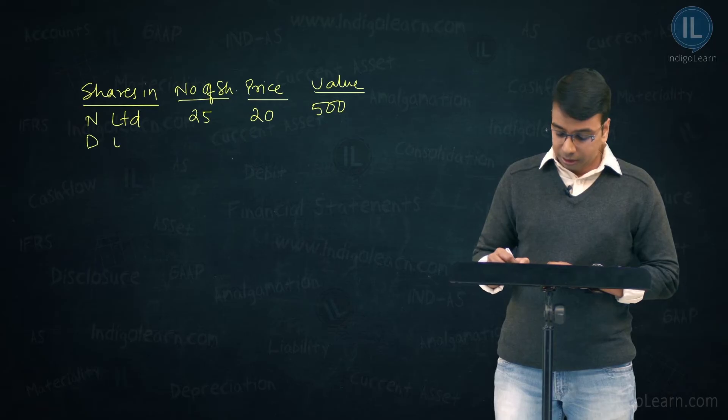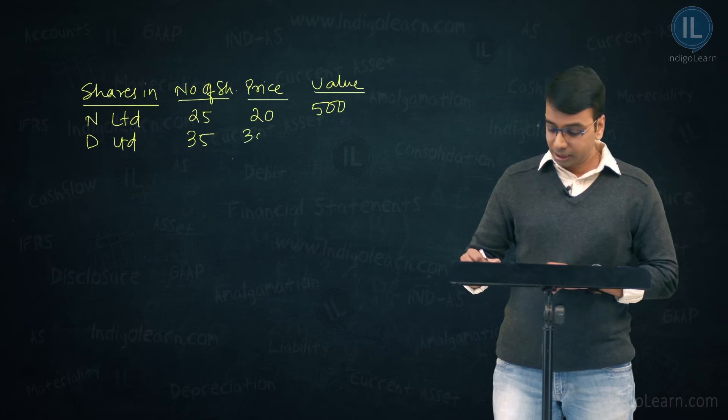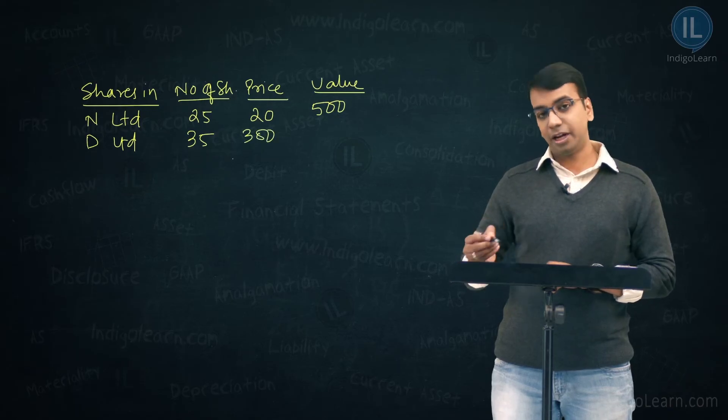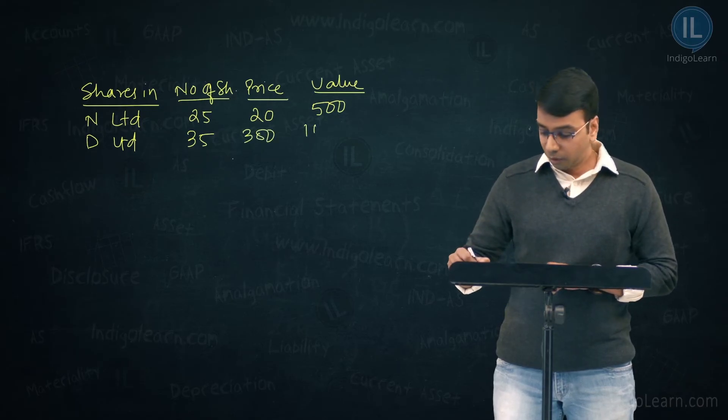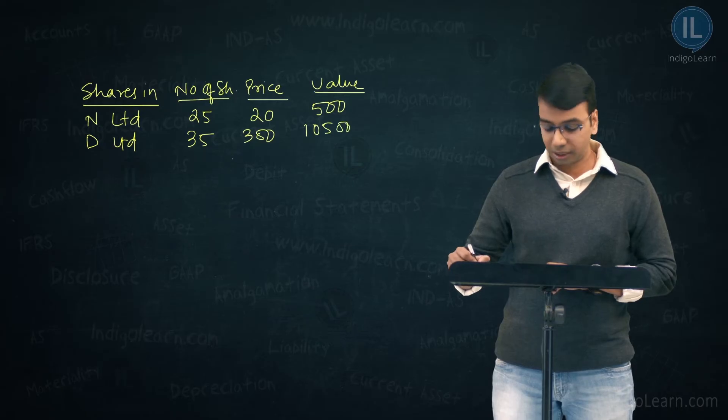Next, D limited number of shares 35, market price ₹300, 35 into 300 is ₹10,500.